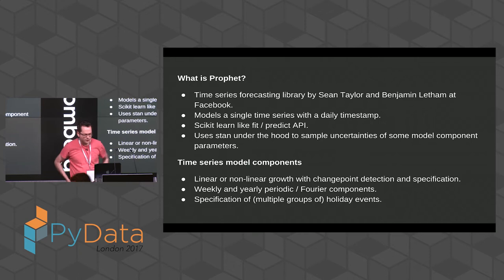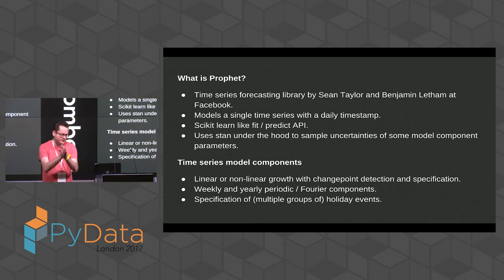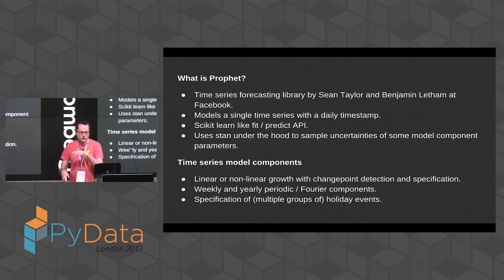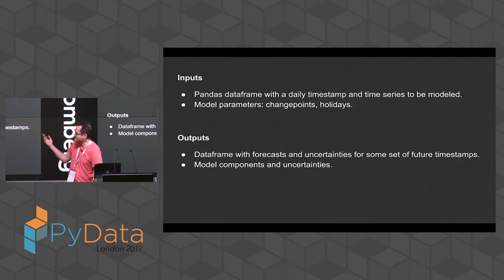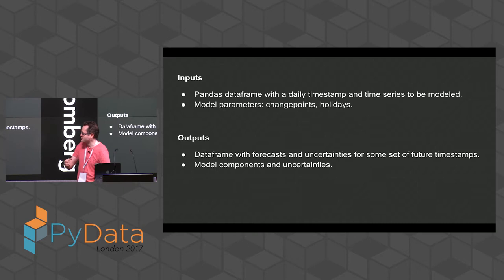The actual time series model has linear or nonlinear growth with change point detection and specification. So Facebook might release a new feature and they want to impose a constraint on the model, saying things are changing after this point. There are weekly and yearly periodic components modeled in Fourier space — no daily component yet — and you can also specify holidays like the Super Bowl. It takes a pandas DataFrame as input with model parameters for change points and holidays, and outputs a DataFrame with forecasts, uncertainties, and model components.